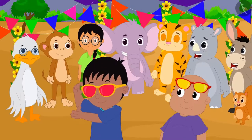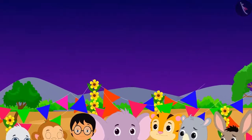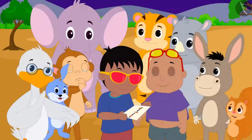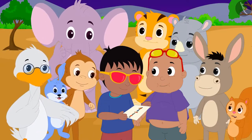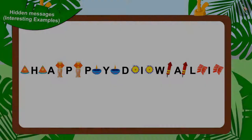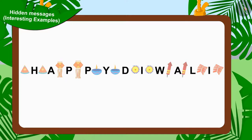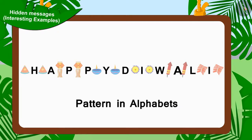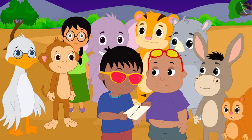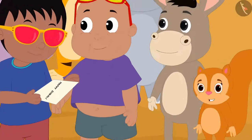Raju once again looked at the sky with his glasses and saw a new hidden message. The villagers together started solving this hidden message. Children, can you solve Jeev's hidden message? Well done children, your answer is absolutely correct. The message is hidden in the form of one alphabet at a time in between these shapes. Chanda solved Jeev's hidden message by writing all the alphabets together and shouted out the message to all the villagers: 'Happy Diwali!'